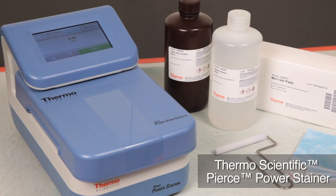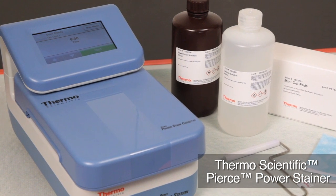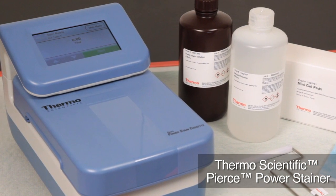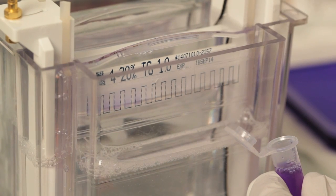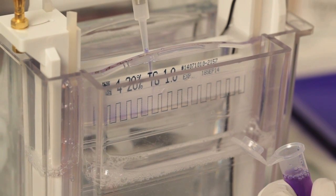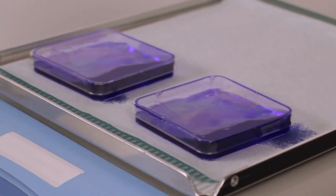The Thermoscientific Pierce Power Stainer is designed for rapid Kumasi staining of proteins separated using polyacrylamide gel electrophoresis. Traditional Kumasi staining of protein gels often requires a one hour to overnight staining protocol.